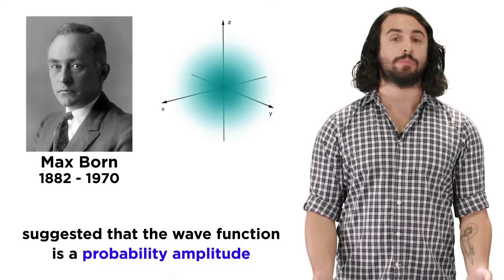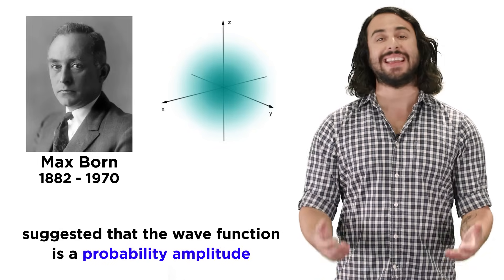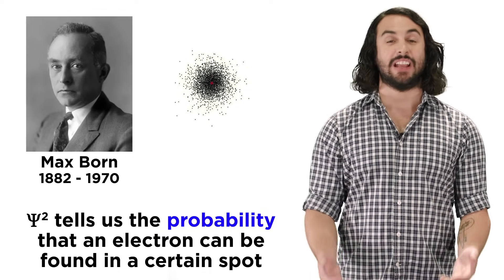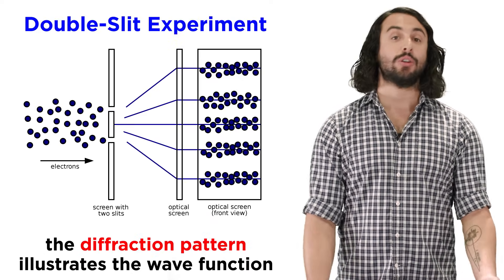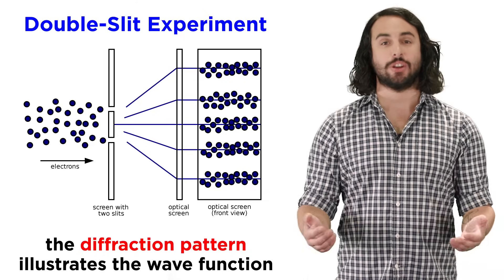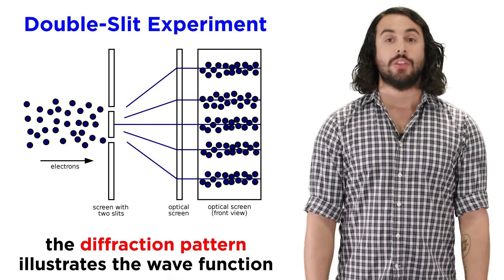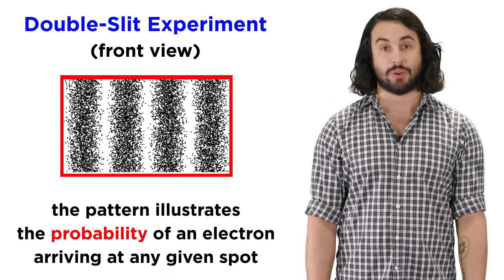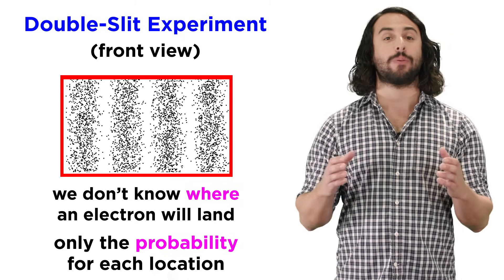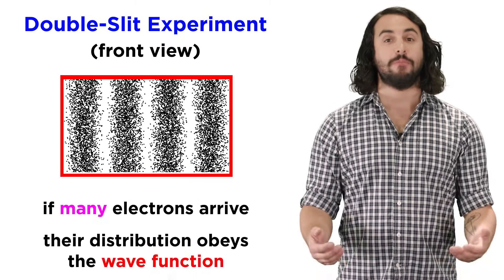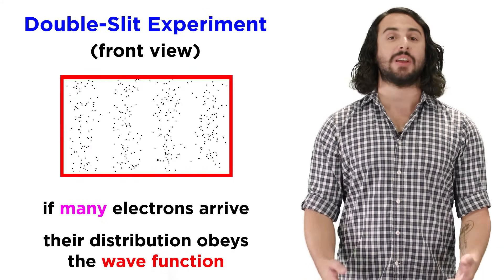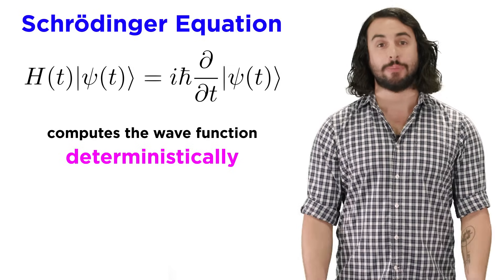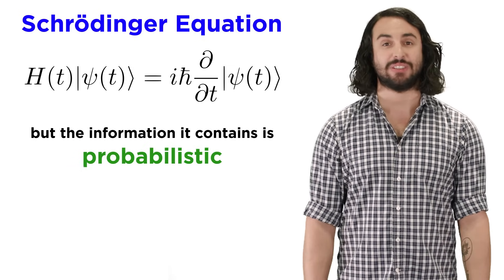Max Born proposed that we interpret the wave function as a probability amplitude, where the square of the magnitude of the wave function describes the probability of an electron existing in a particular location. Looking back at the double slit experiment, we understand the diffraction pattern as illustrating this wave of probability. The pattern is not the electron itself — it is the probability that an electron will arrive at each location on the screen. We can't predict where one electron will go, only the probability that it will arrive at a particular location. If many electrons arrive at the screen, it becomes apparent how their distribution obeys the wave function. So the Schrödinger equation does compute the wave function deterministically, but what the wave function tells us is probabilistic in nature.